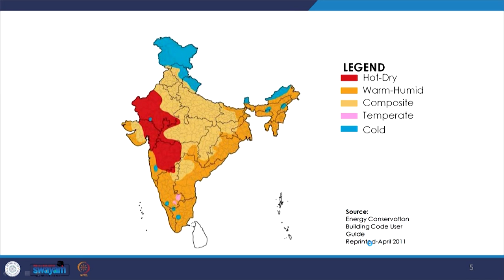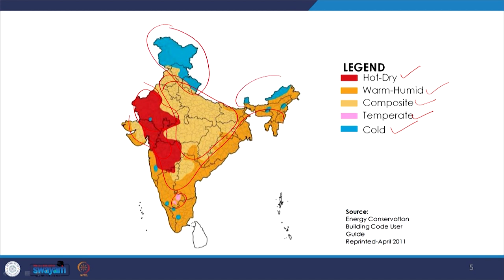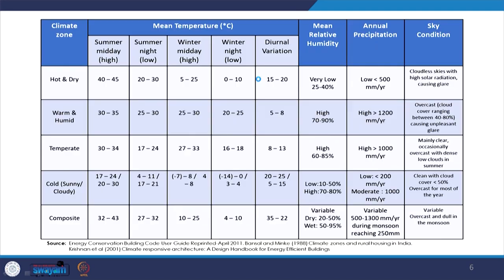The 5 climatic zones for India are: hot dry, which is largely the western desert part; warm humid, which is largely the coastal region; composite, which is mainly the north central region; temperate, present in very limited pockets such as where Bangalore is located; and cold, which is largely in the northern part of the country. Let us look at how these climates have been classified and what falls under each of these categories.